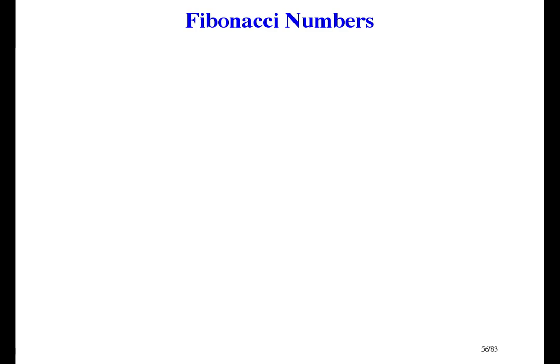Since a Fibonacci number is defined as the sum of the two previous numbers, the idea is to keep track of a pair of adjacent Fibonacci numbers. So if the problem is X prime equals Fib of n, we refine it by saying we'll do more than that — we'll also make Y prime be Fib of n plus 1. And let me just call that new problem of finding a pair P, so I don't have to write so much.